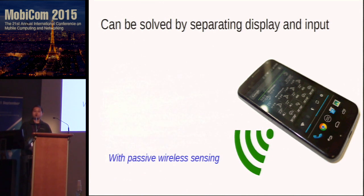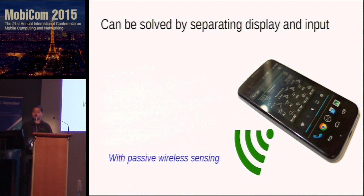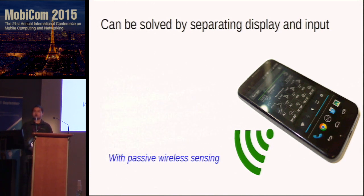This problem can be naturally solved if we separate display and input surfaces and use the area surrounding the mobile device as the input surface. This can be solved with passive wireless sensing, since it does not require instrumentation on the user or the surface.